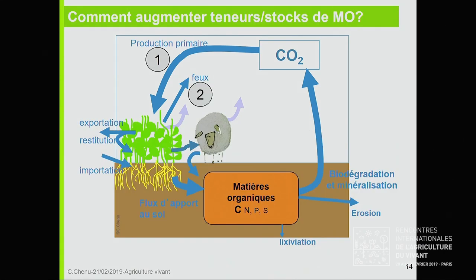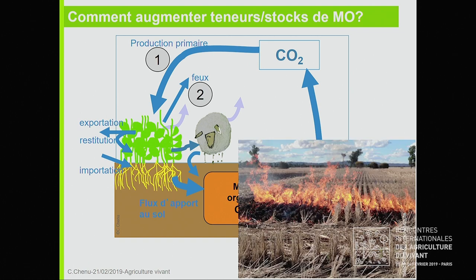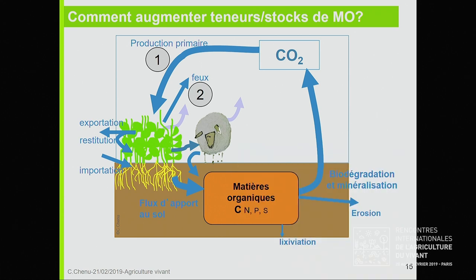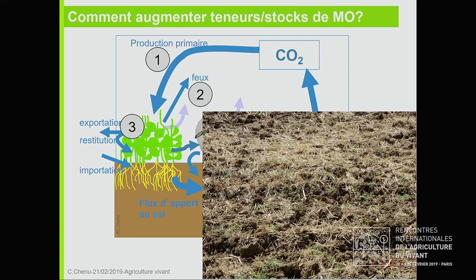Ensuite, une deuxième chose à faire — qui ne nous concerne pas trop en contexte européen mais peut l'être ailleurs — c'est bannir les feux, éviter cette perte sèche et brutale de carbone des sols. Que peut-on faire aussi ? Essayer de restituer le plus possible de résidus de culture, la restitution des pailles autant que c'est possible. Il y a des compromis en termes de filières de valorisation de ces résidus, mais les apporter au sol est une valorisation, il faut vraiment en être conscient.